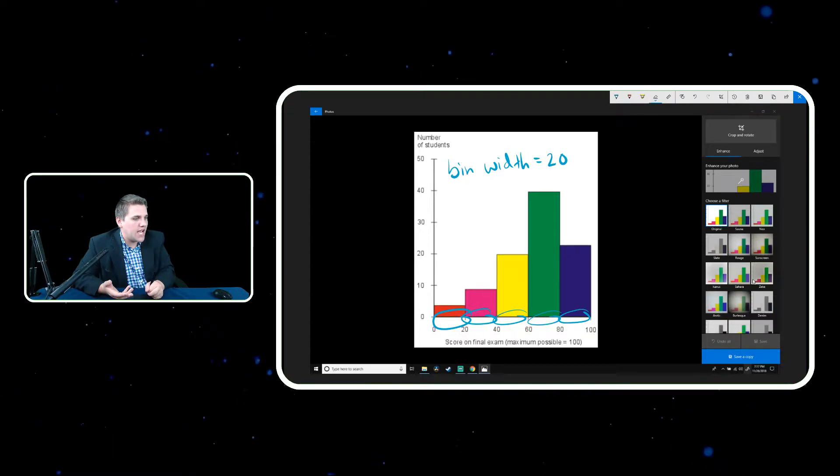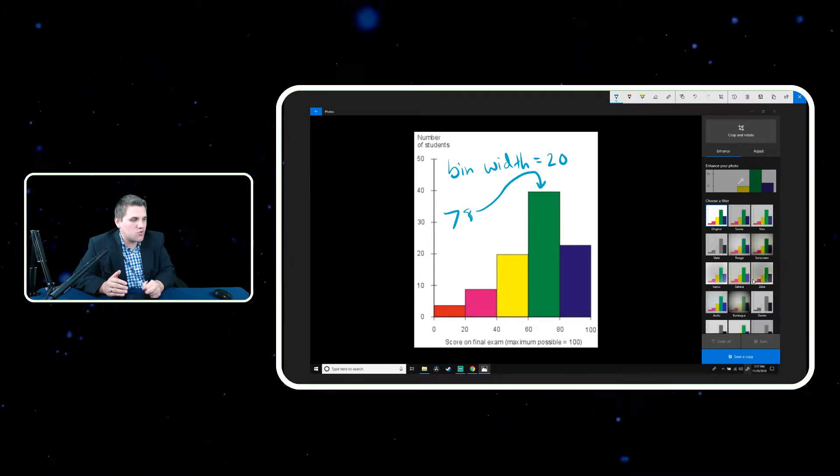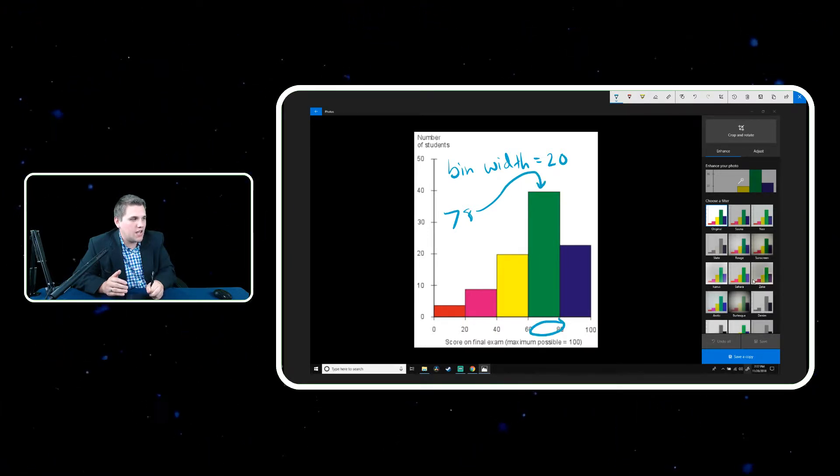So for example, if my data had a number, let's say 78, which of these bars would represent that number? Well, it would be specifically this one right here, because this one is between 60 and 80. 78 is between 60 and 80, so it would be represented in this bar.